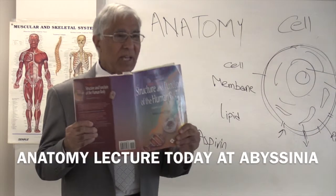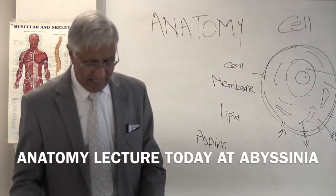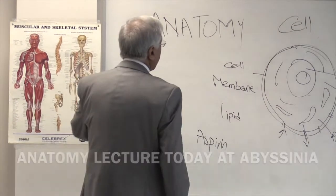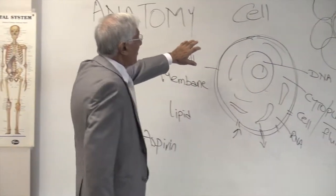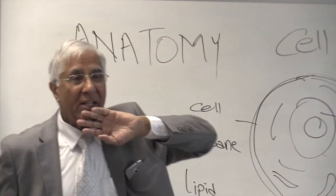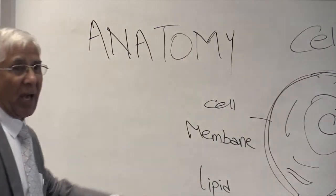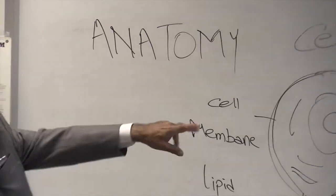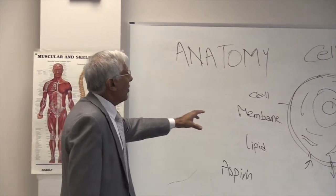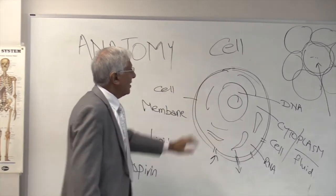Today we are talking about anatomy. We are into the cellular structure because we are all made up of trillions of cells. The cells are like the building blocks of a building — the bricks. So we have millions and trillions of cells in the body.